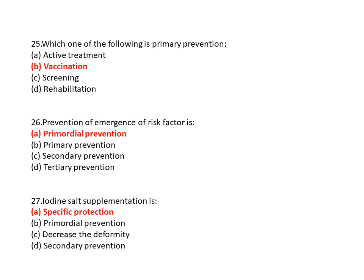Question 26: Prevention of emergence of risk factors is? Option A is primordial prevention, option B is primary prevention, option C is secondary prevention, and option D is tertiary prevention. So option A is the correct answer — primordial prevention.